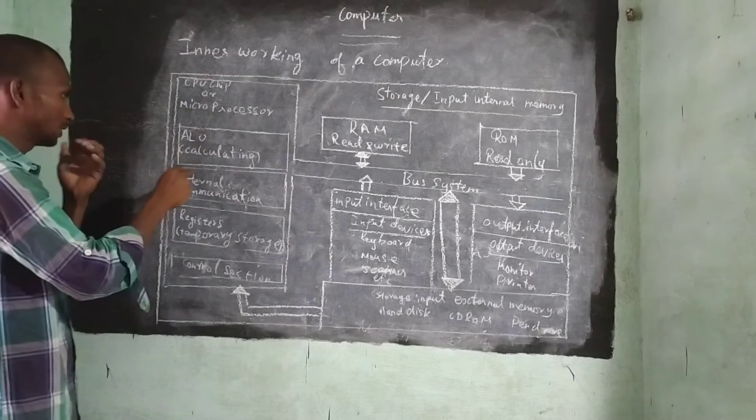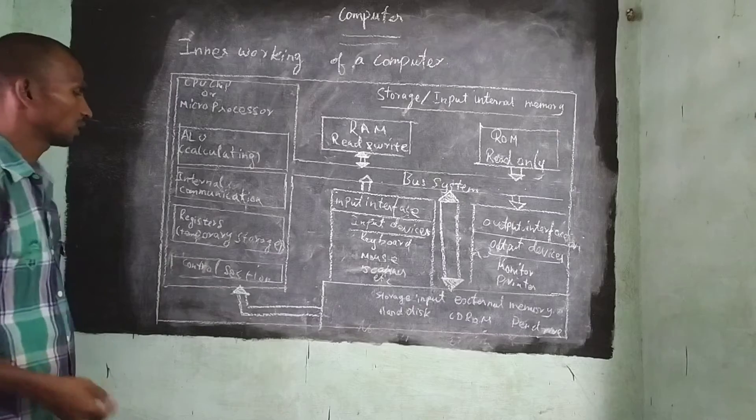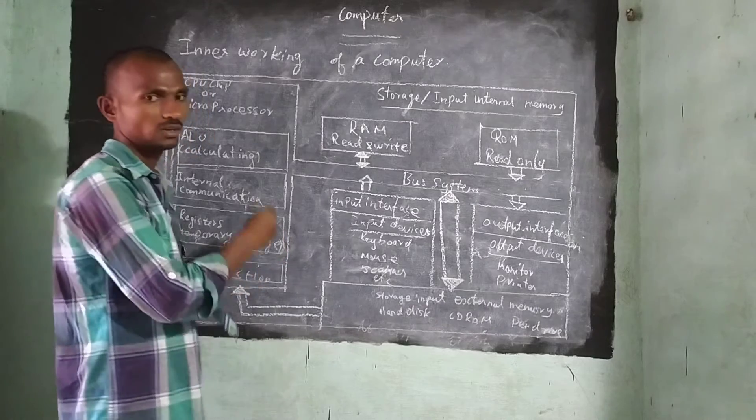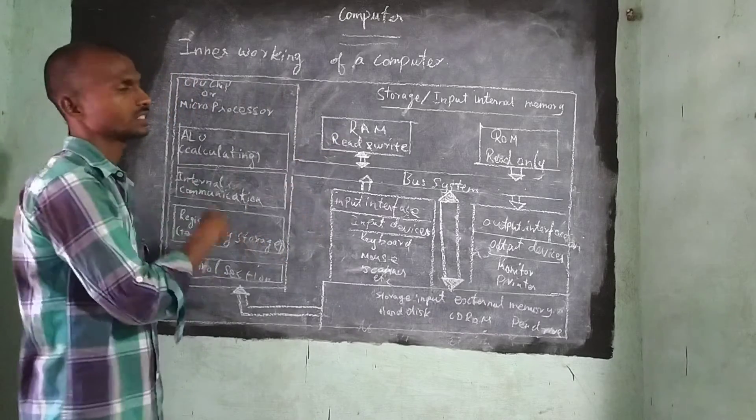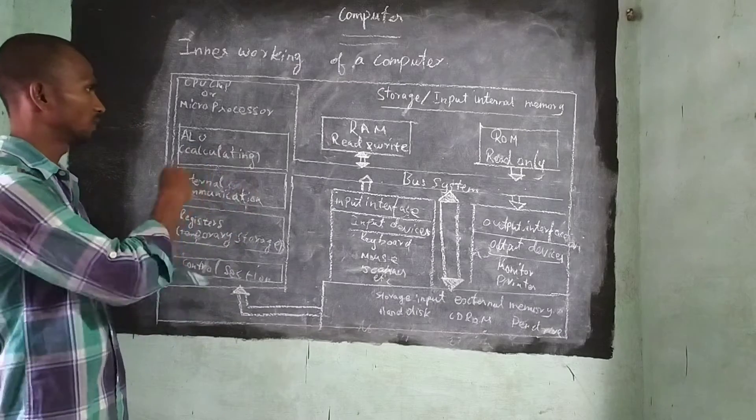Next CPU. CPU we need called ALU, Internal Communication, Register, Control Section. Like that only. It is the overall structure of the computer. So now we are going to see deeply.